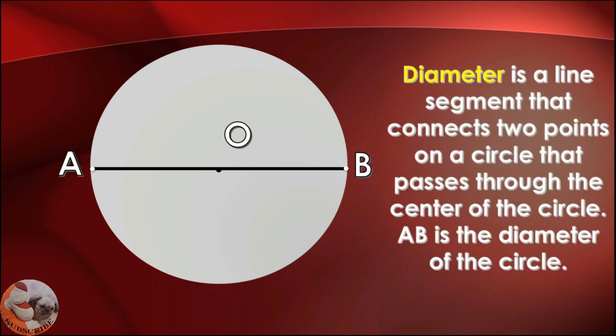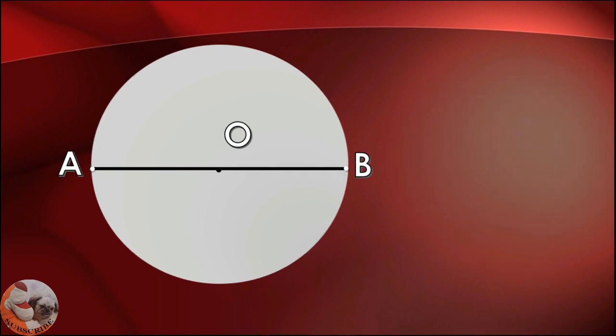The diameter is a line segment that connects two points on a circle and passes through the center of the circle. Line segment AB is the diameter of the circle.